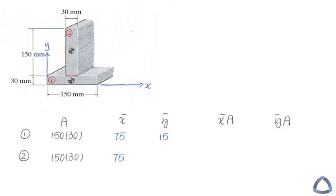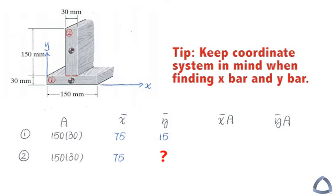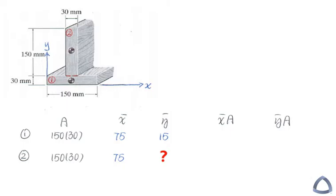So what is the number for the y bar? We need to fill out here. Will it be half of the 150 or something else? You need to keep in your mind always based on the coordinate system here. We can see if we go halfway of 150, it's only to the line here. It's not to the x axis. So that's why we need to add this 30 millimeter in the calculation.